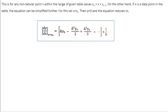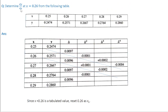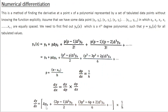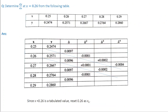Let's do one example problem to make the concept clearer. Determine dy/dx at x = 0.26 from the following table of experimental x and y values. What we need first are the leading terms and leading differences, so we must calculate the difference table.